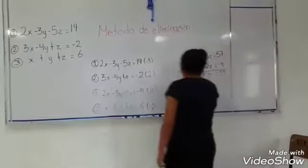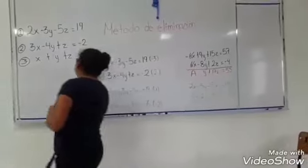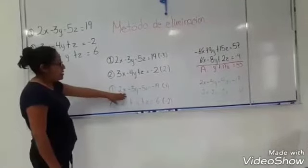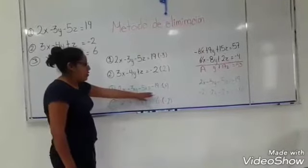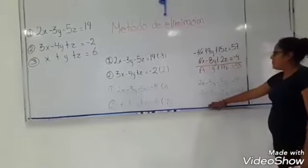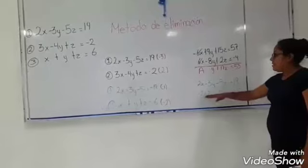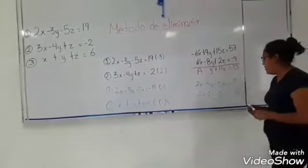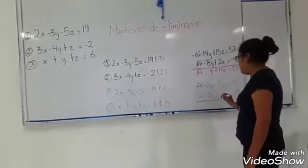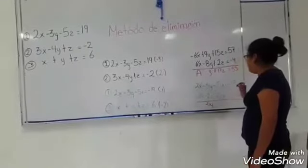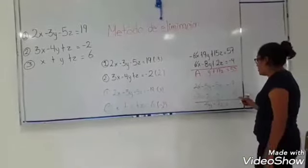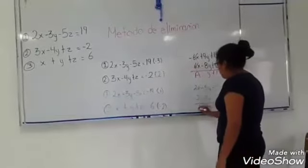Y aquí tendríamos una primera ecuación, nuevamente a la que llamamos A. De igual forma, tendríamos que tomar las ecuaciones número 1 y número 3 para eliminar a las X. De igual forma tendríamos que multiplicar a la primera ecuación por 1 y a la otra por menos 2. Y obtendríamos la ecuación: 2X menos 3Y menos 5Z, y menos 2X menos 2Y menos 2Z es igual a menos 5. Y al combinarlas tendríamos menos 5Y menos 7Z. A esta ecuación la llamamos D.